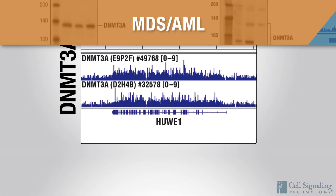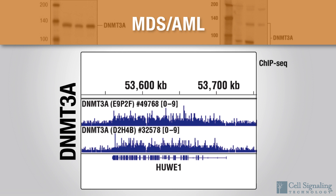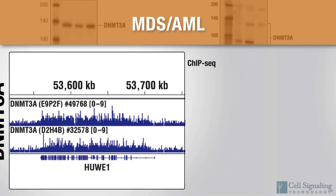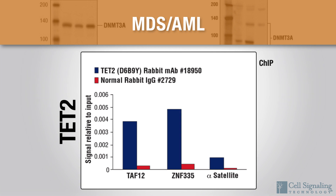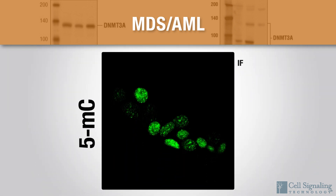The methyltransferase DNMT3A facilitates proper levels of DNA methylation and gene silencing in normal cells, but is often mutated in MDS and AML. Inactivation of the methyltransferase TET2 is one of the most frequent drivers of MDS and AML. You can monitor changes in levels of 5-methylcytosine and 5-hydroxymethylcytosine resulting from overexpression of DNMT3A or inactivation of TET2.